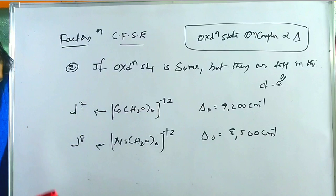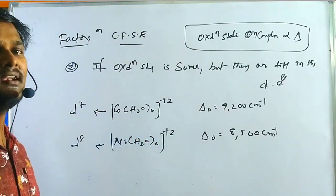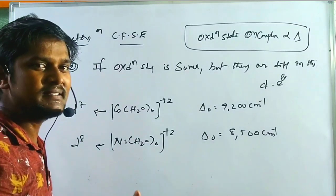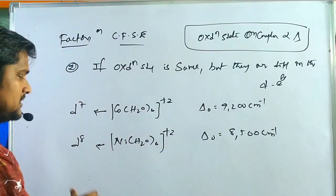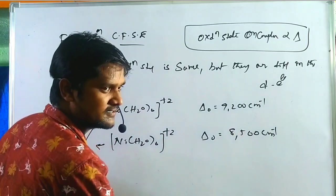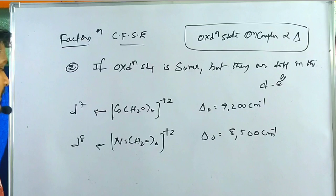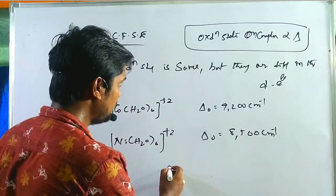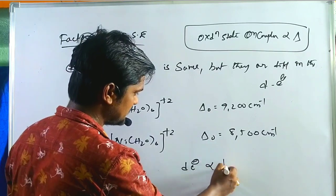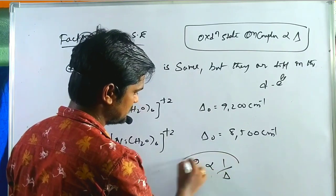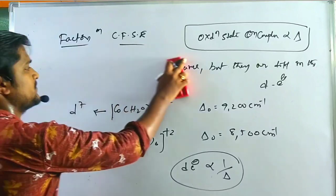The reason is that as the number of d electrons on the metal cation increases, it prevents the ligands from approaching. That is why the crystal field splitting is less. We conclude that the number of d electrons is inversely proportional to the splitting energy.